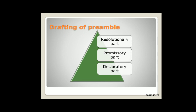This is the basic classification of the preamble on the basis of its different objectives — it is a resolution, a promise, and a declaration. Regarding the history of the preamble throughout the world, the American Constitution was the first to use a preamble. In the Indian context, the preamble is completely based on the Objective Resolution which was drafted and moved by Pandit Jawaharlal Nehru and also adopted by the Constituent Assembly.